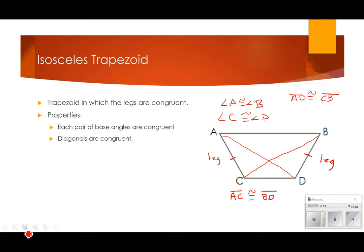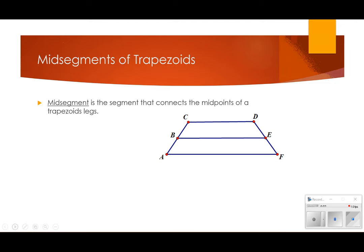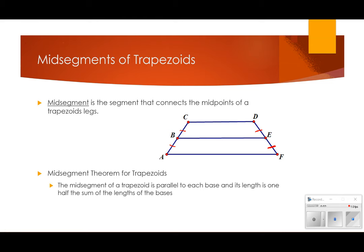We also have a mid-segment theorem, and that is the segment that connects the midpoints of the trapezoid's legs. This is going to be congruent to this, and this will be congruent to this. Since they're isosceles, they're going to be congruent to each other. The mid-segment theorem for trapezoids is similar to the one for isosceles triangles — actually, this applies to all trapezoids, not just isosceles ones.